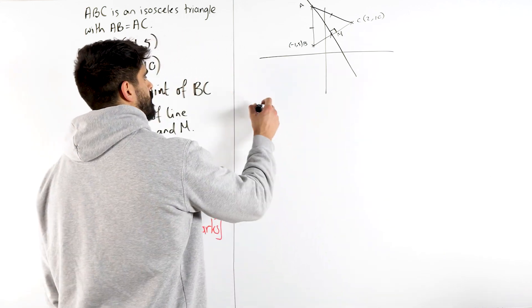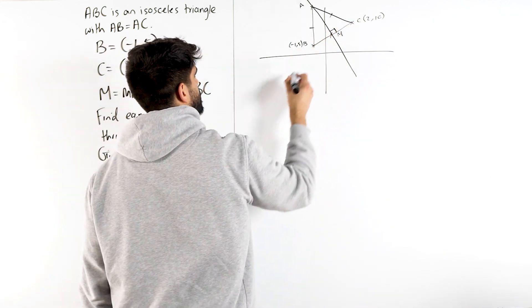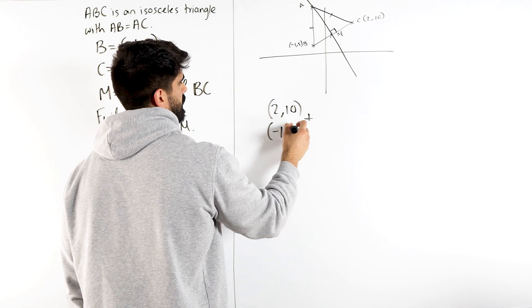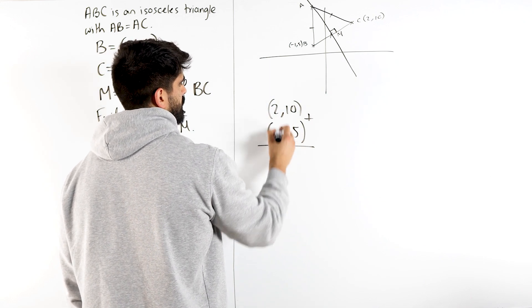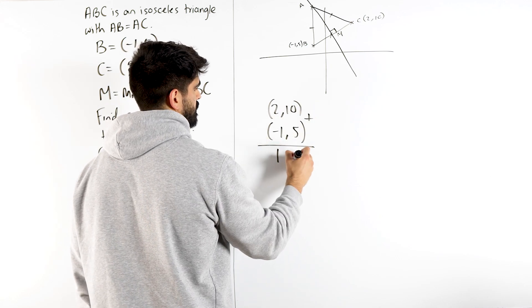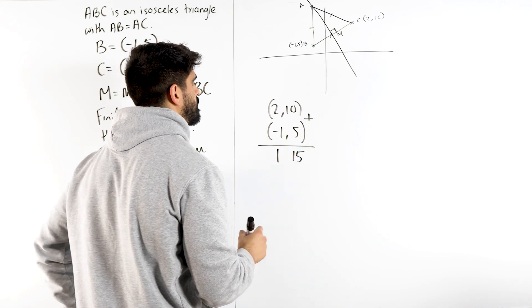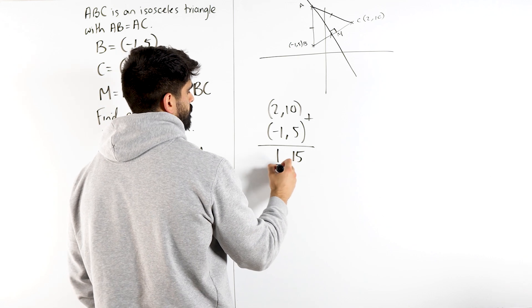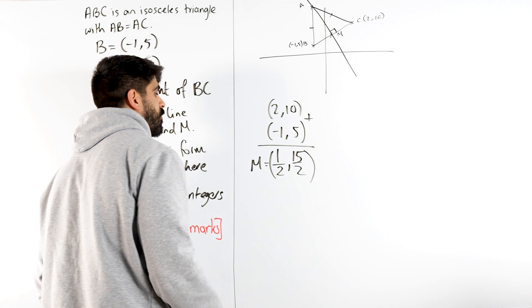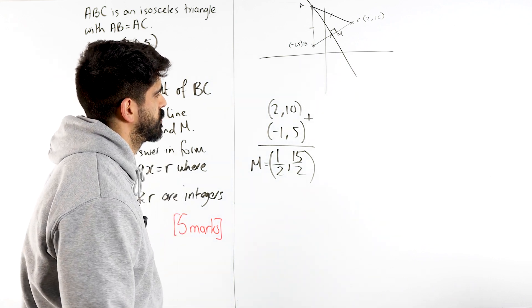So to find M, all we do is we average these two coordinates by adding them and dividing by 2. Minus 1 plus 2 is 1, and then 10 plus 5 is 15, and then M is we just divide by 2. So that's 1/2, 15/2. Not a very nice coordinate. We're already getting fractions.